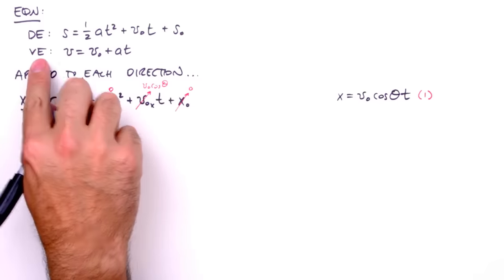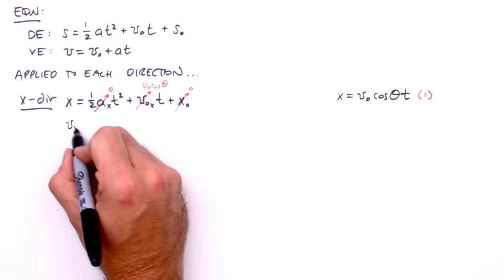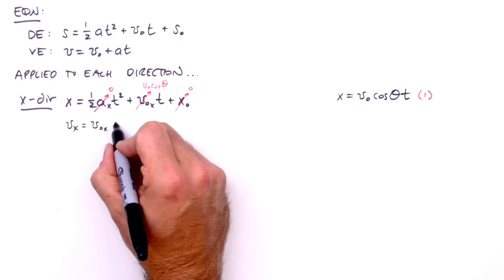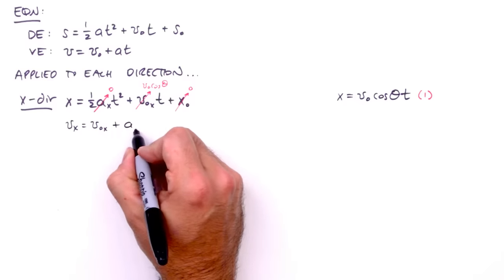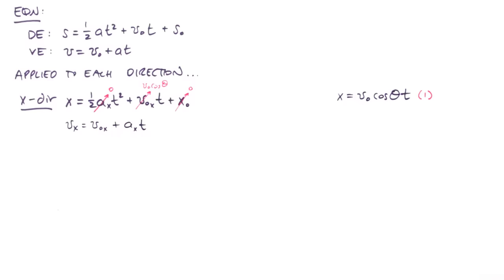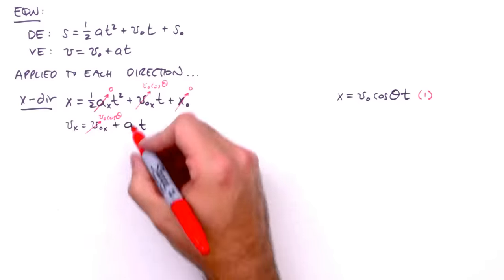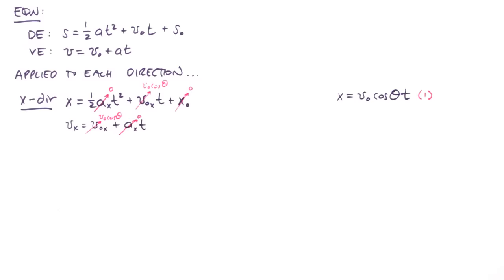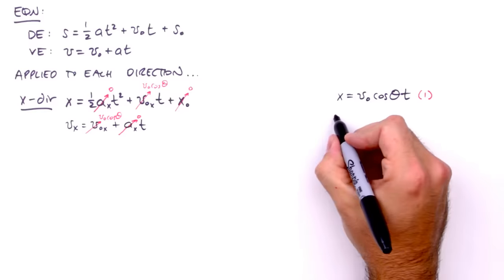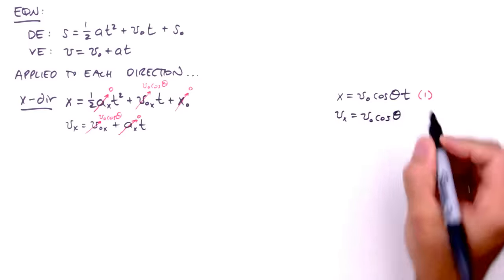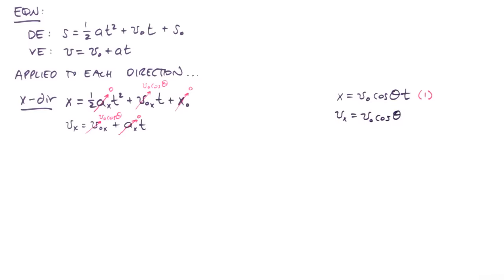Now we apply the velocity equation to the x direction, and we get v sub x equals v sub o sub x plus a sub x times t. We'll set v sub o sub x to v sub o cosine theta, and again the horizontal acceleration of a projectile is zero. So the velocity equation in the x direction simplifies to v sub x equals v sub o cosine theta. We'll label this equation 2 and set it aside.